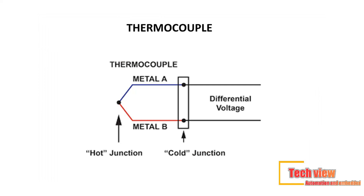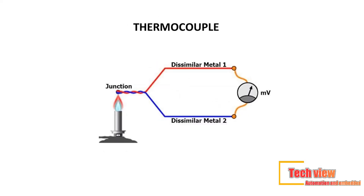A thermocouple is a type of temperature sensor made by joining two dissimilar metals at one end. The joined end is referred to as the hot junction. The other end of these dissimilar metals is referred to as the cold end or cold junction, which is formed at the last point of thermocouple material. If there is a difference in temperature between the hot junction and cold junction, a small voltage is created. This voltage is referred to as an EMF (electromotive force) and can be measured and used to indicate temperature.